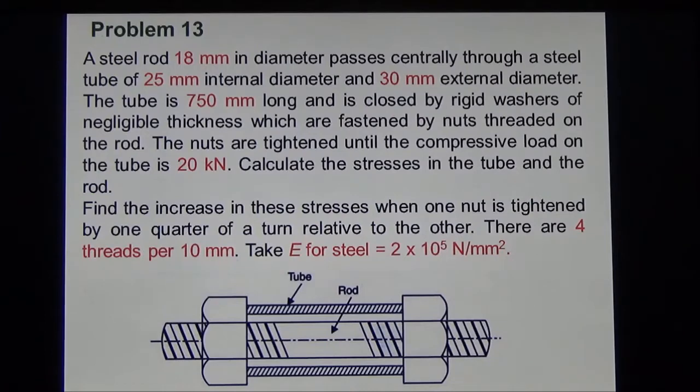There are four threads per 10 mm. Take Young's modulus for steel equal to 2 into 10 to the power 5 Newton per mm square. That means the tube and rod both are steel and both are having Young's modulus 2 into 10 to the power 5 Newton per mm square.